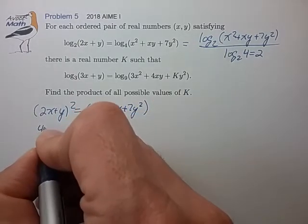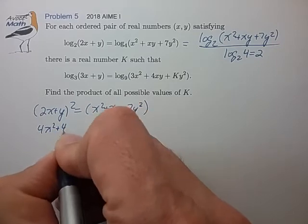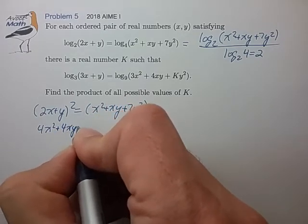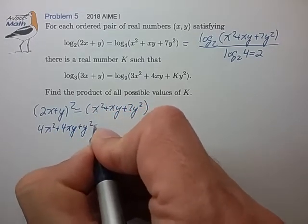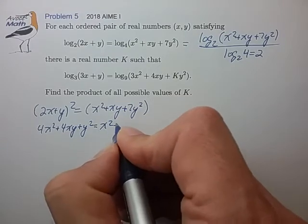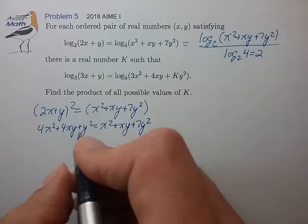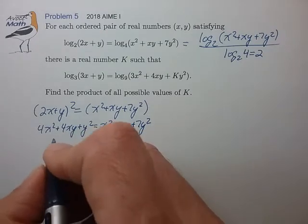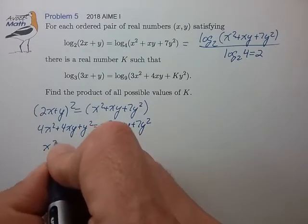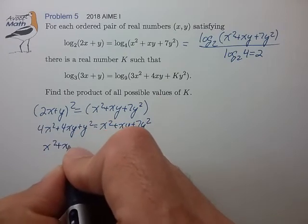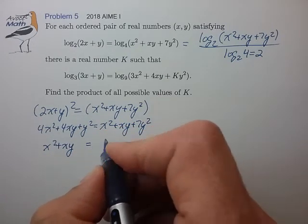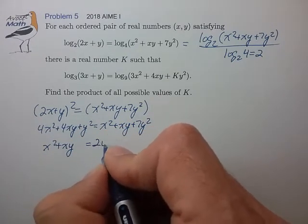Expand this out. Collect like terms. I think we have to divide by 3 to find that x squared plus xy is equal to 2y squared.